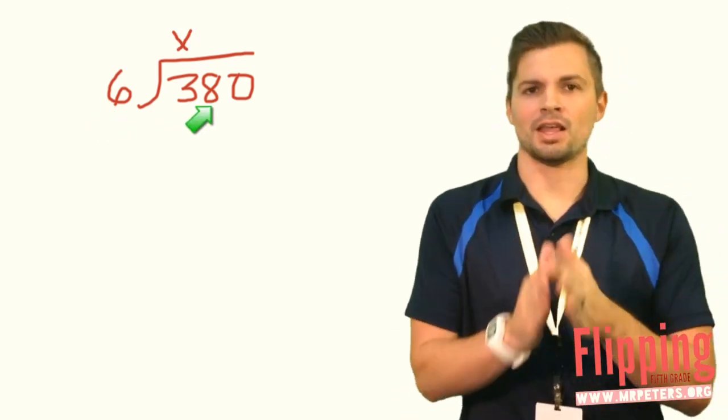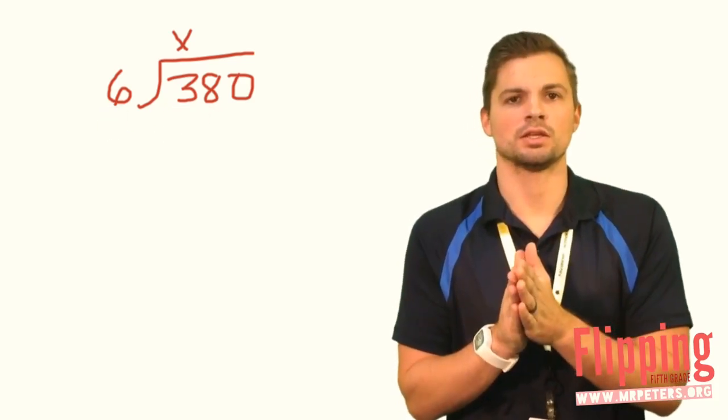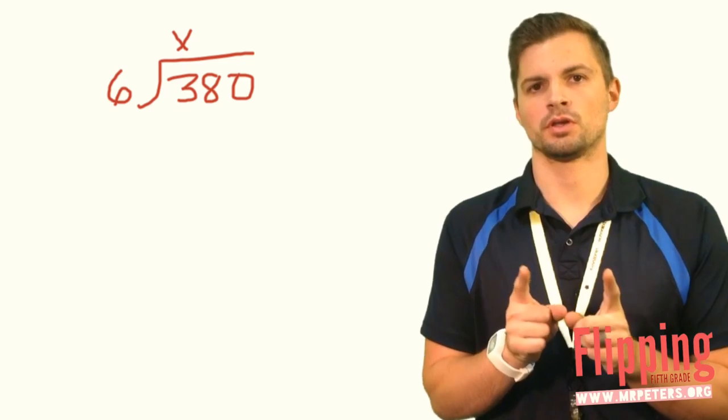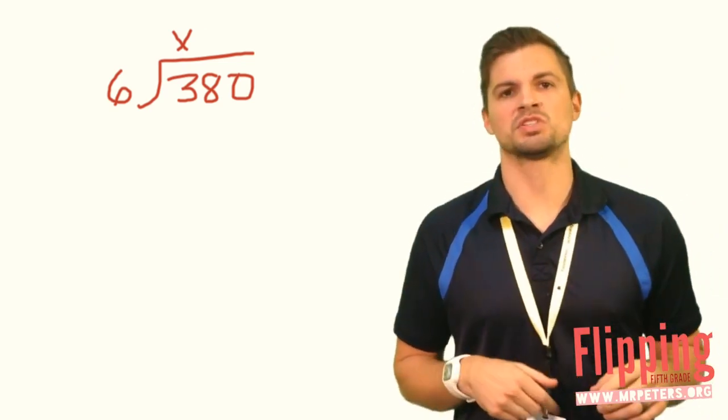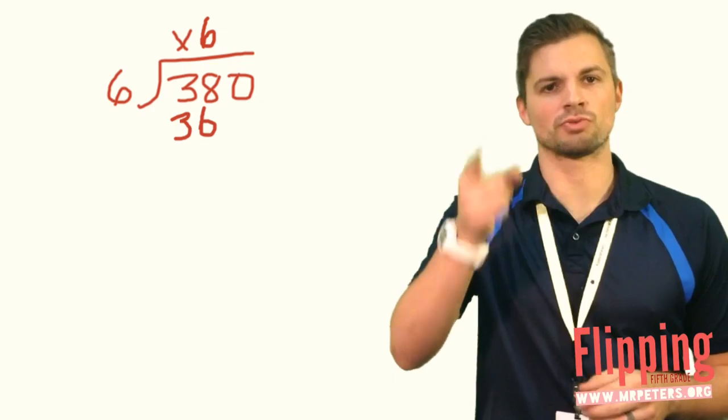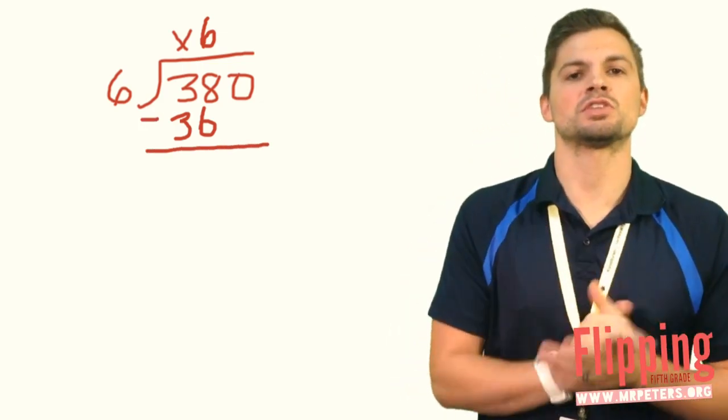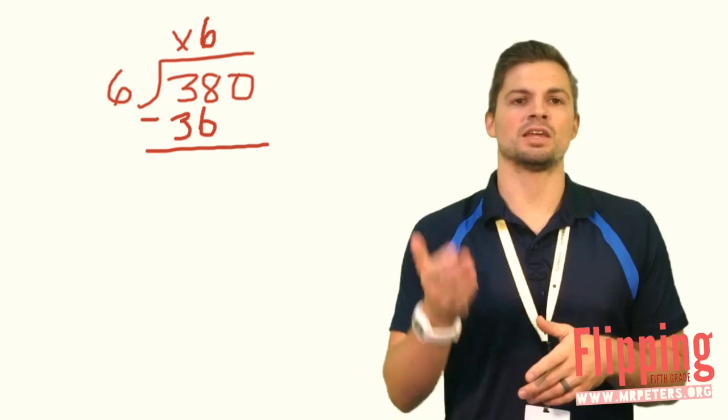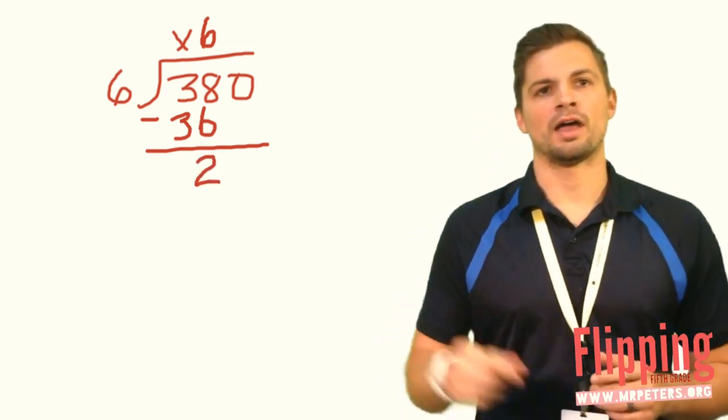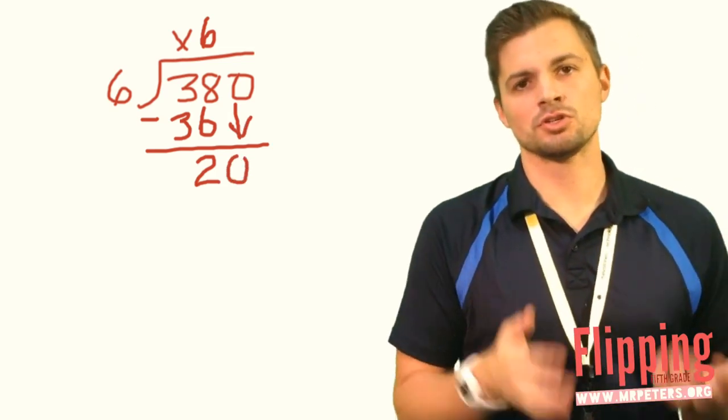Now we're looking at not 3, we're looking at 38. How many times does 6 go into 38? 6 times what will give me an answer close to 38 without going over? Good. 6 times 6 is 36. I'm going to use 6. I'm going to put that 6 directly above the 8 because lining up is incredibly important. So then 6 times 6 is 36. I then take 38 minus 36 to give me the answer of 2. I have to drop my 0. Bring down that 0. So now it's not 2, it's 20.